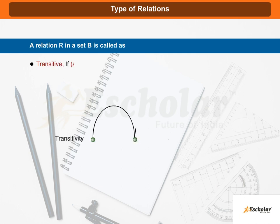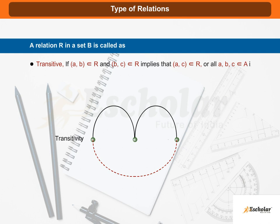Transitive. If (a, b) belonging to R and (b, c) belonging to R implies that (a, c) belonging to R for all a, b, c belonging to A, i.e., if an element a is related to b and b is related to c, then a is also related to c.